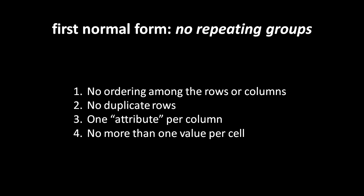No repeating groups also means you shouldn't have duplicate rows — in practice, every table should have a primary key, which prevents duplicate rows. It's also interpreted as meaning that each column should only express one attribute; you shouldn't stuff multiple attributes into one column. Similarly, every cell — every intersection of a row and column — should never have more than one value. In general, first normal form just means make sure your tables are really tables: no ordering of rows or columns, one value per cell.